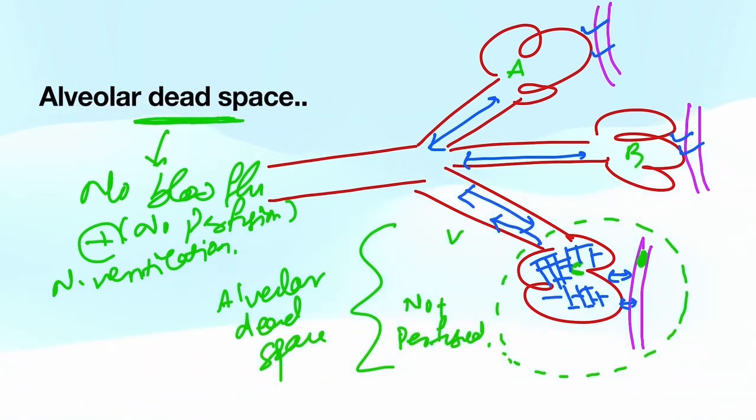So the inspired air gets returned during expiration as it is, which resultantly decreases the overall CO2 concentration when measured entirely. Let me draw another diagram for you which will make you understand the concept in depth. This is a CO2 concentration versus time graph.